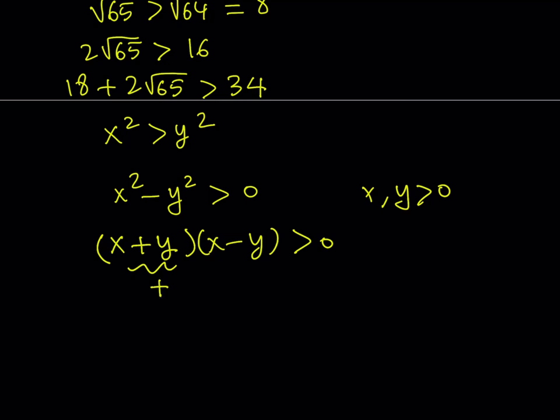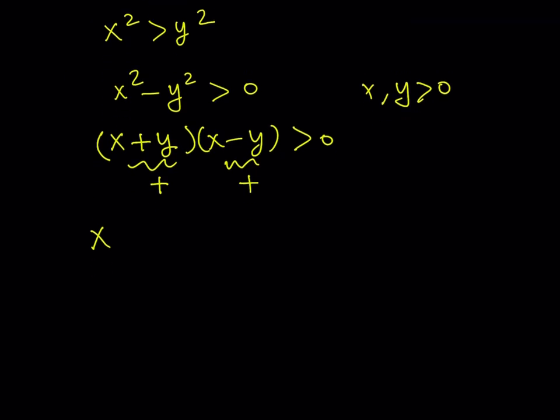So this is a positive quantity, and it's multiplied by x minus y, which gives us another positive quantity. So x minus y also needs to be a positive quantity. So we now know that x minus y is greater than 0, which implies that x is greater than y.